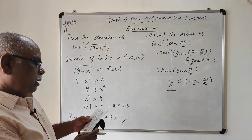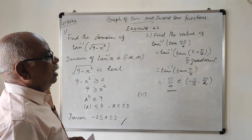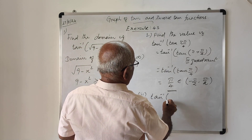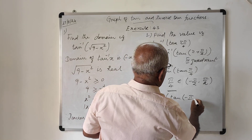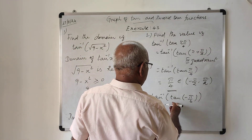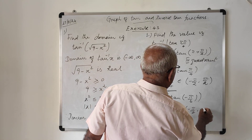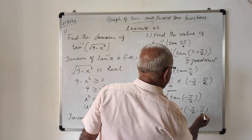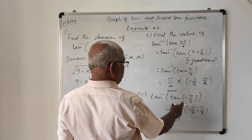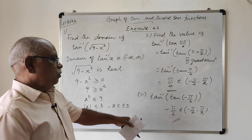The second part: find the value of tan⁻¹(tan(-π/6)). Since tan⁻¹ and tan are reciprocal functions, this is simply -π/6, which also belongs to the interval (-π/2, π/2). Therefore, the value of this function is -π/6, because it lies within the domain interval.